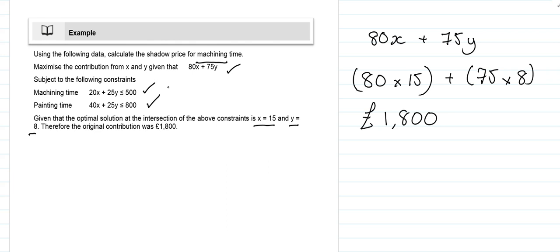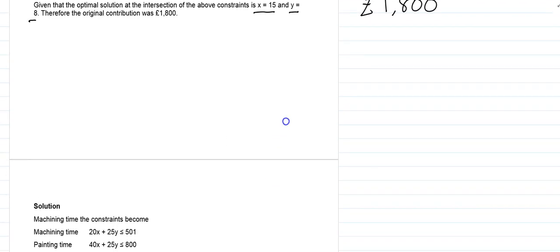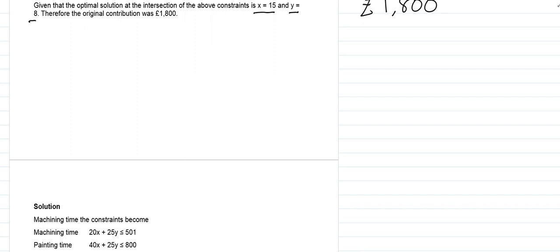What we're going to do is concentrate on machining time and add one more unit. Instead of being 500, it'll be 501. We can see below we've now got a new equation.